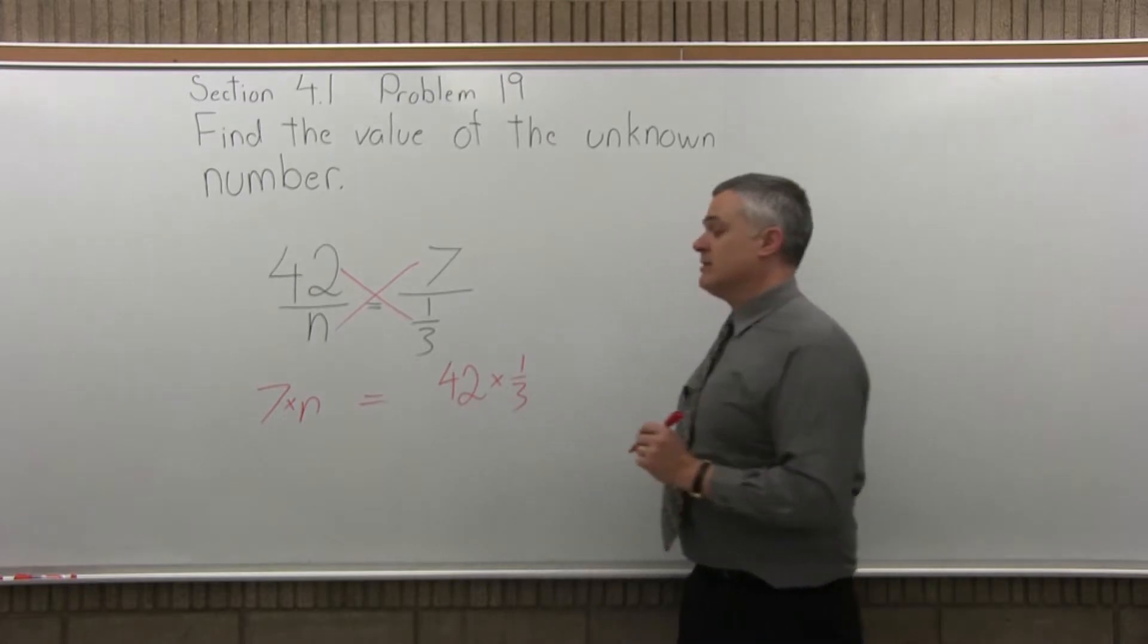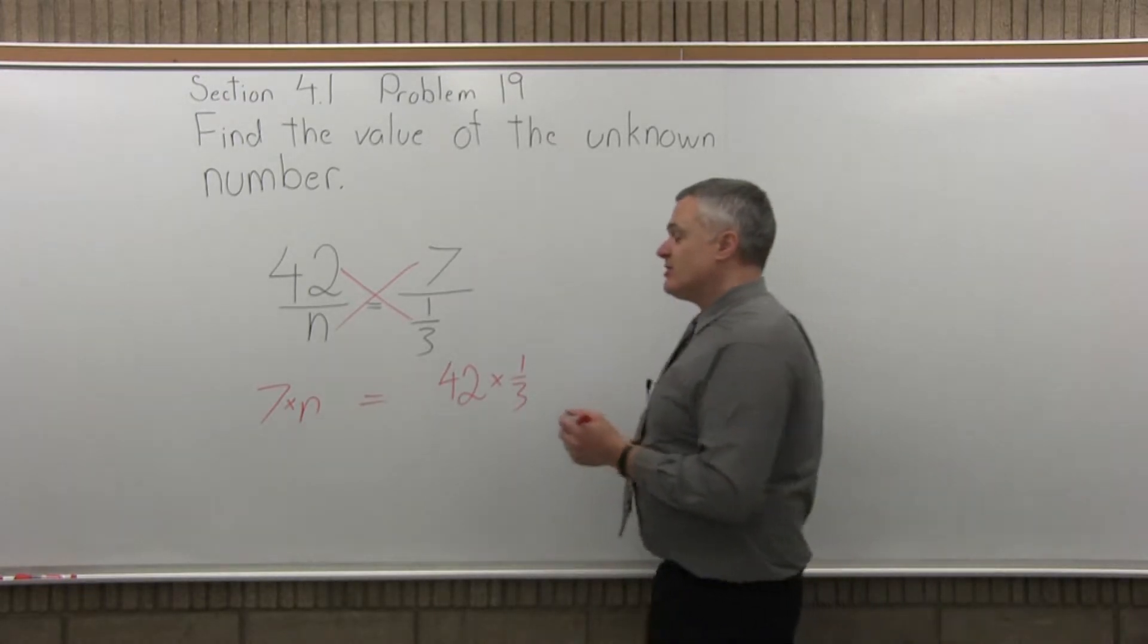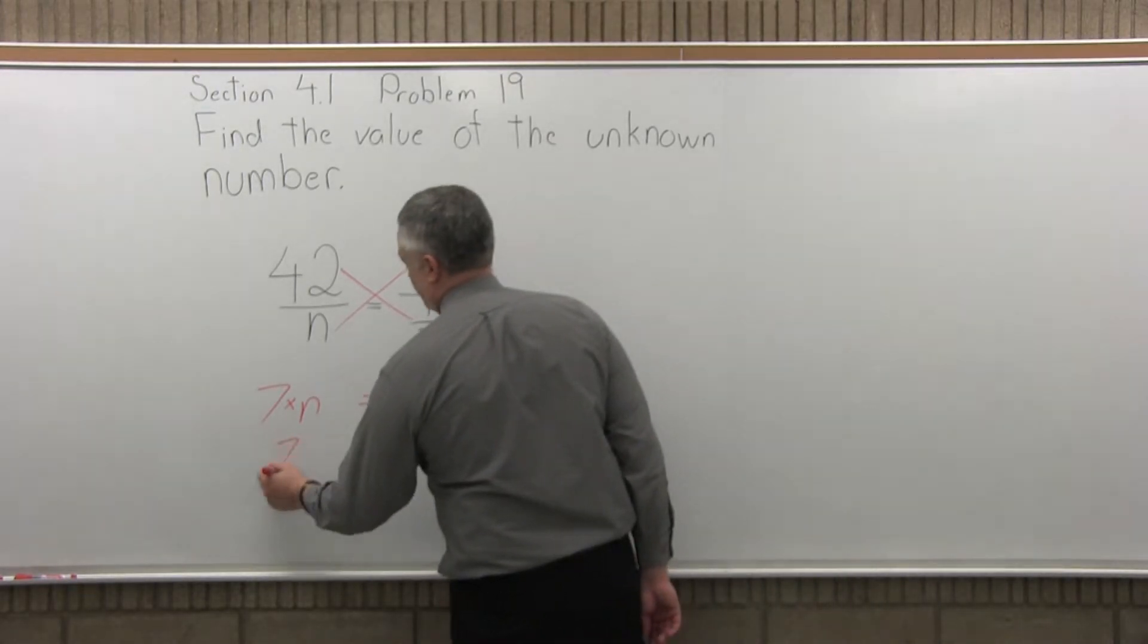And we make those equal. So 7 times n is easier. I'll do that one first. We just write 7n.